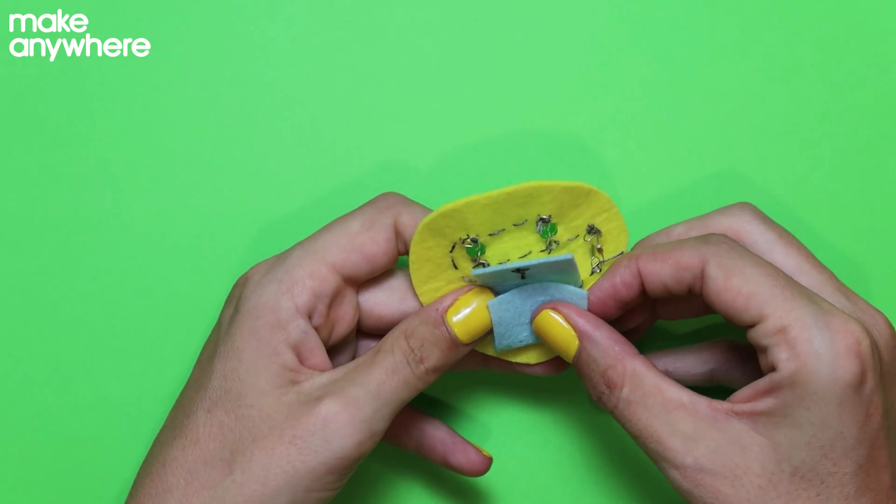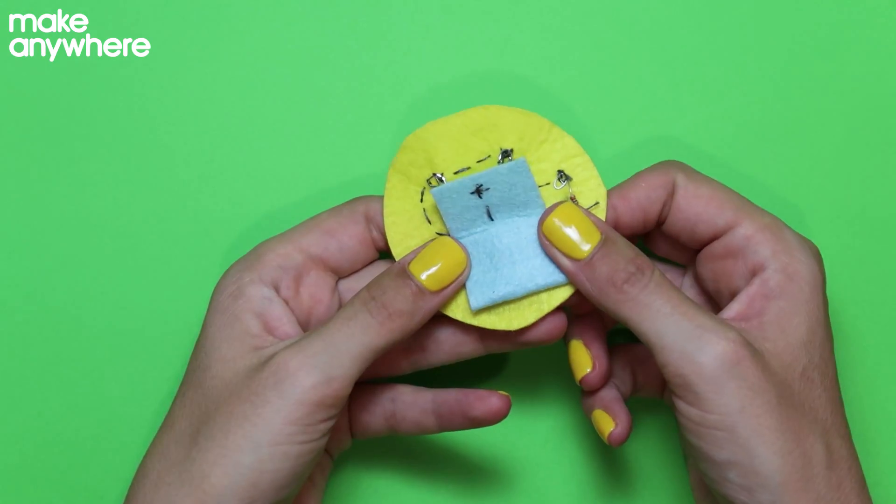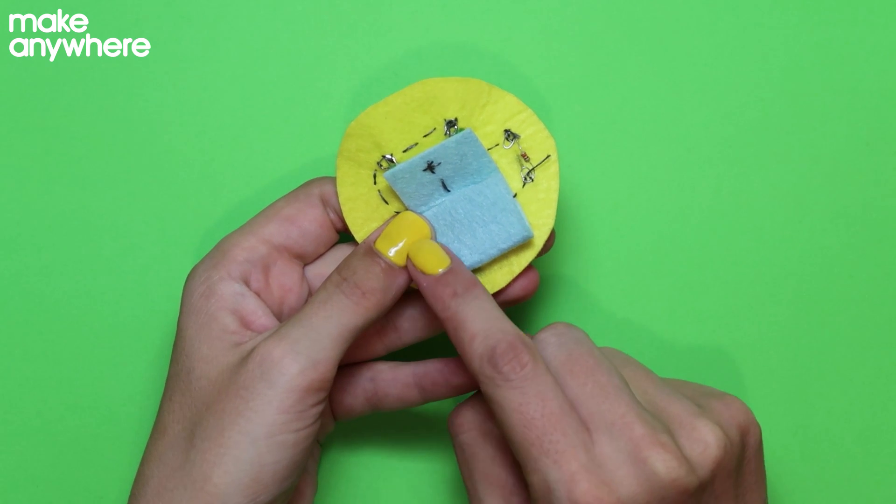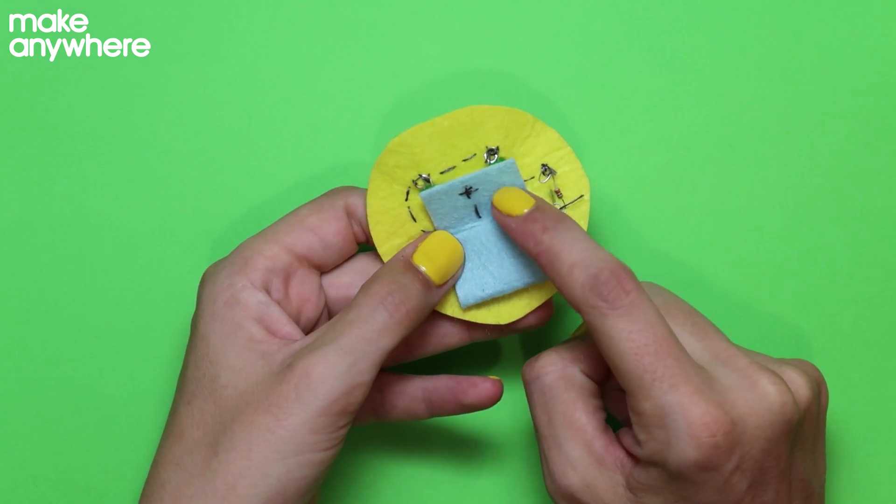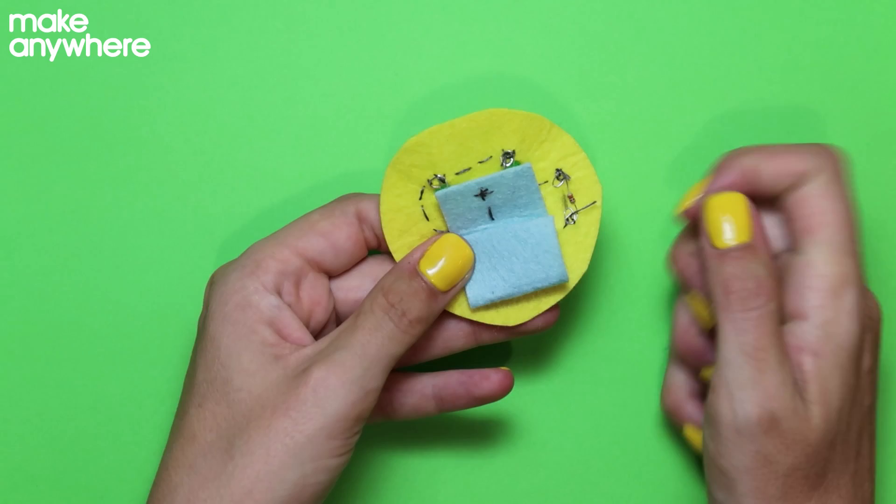Now we need to stitch up our little battery holder. There and there. And then we can trim this into a point so it tucks down a little bit nicer.